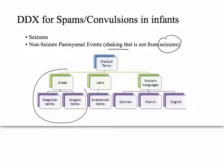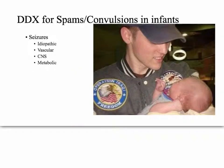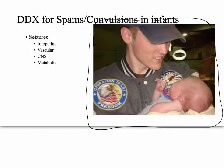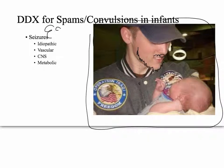If we wanted to be true to medical terminology, we would call it an aseizure paroxysmal event — the prefix 'a' means negative, it's the Greek negative particle. We're going to look first at seizures, then at non-seizure paroxysmal events. If it's a true seizure, you should be able to tell from an EEG. If it's a non-seizure paroxysmal event, you can use an EEG to rule out a real seizure. Sometimes the clinical manifestation is so obvious that you don't need an EEG at all.